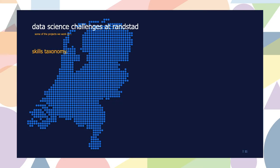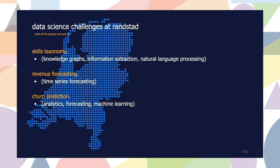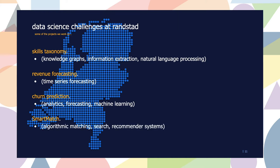What do these people work on? We have a few example projects. The first is the skills taxonomy project, where we aim to extract structured information out of unstructured data — for example extracting skills or education from resumes and vacancy texts — to improve our matching algorithms and gain market insights. We also work on revenue forecasting using time series algorithms, and churn prediction to predict whether a client might stop using our services. The final project I'd like to highlight is Smart Match, our project around algorithmic matching, search, and recommender systems, which is of particular interest for this talk.